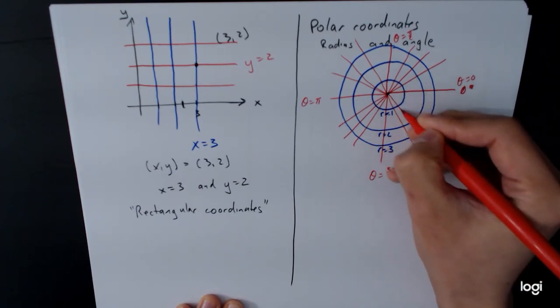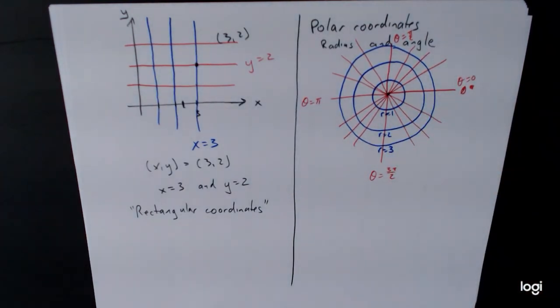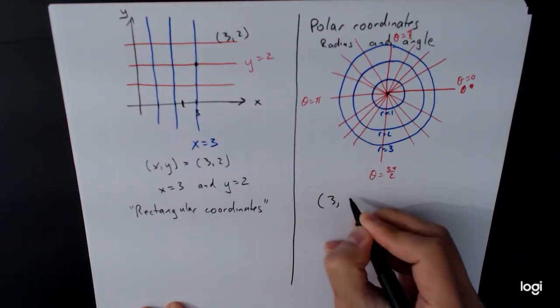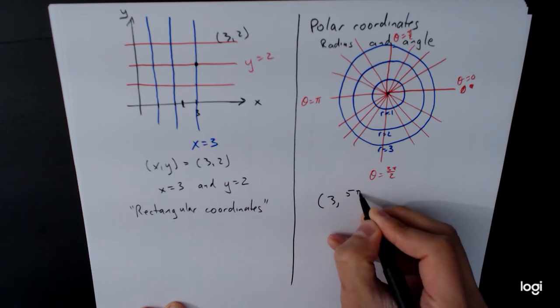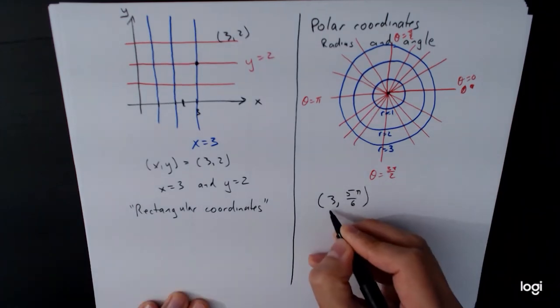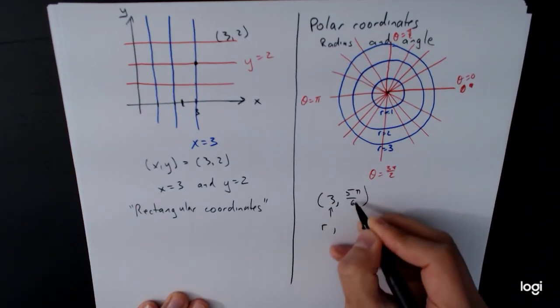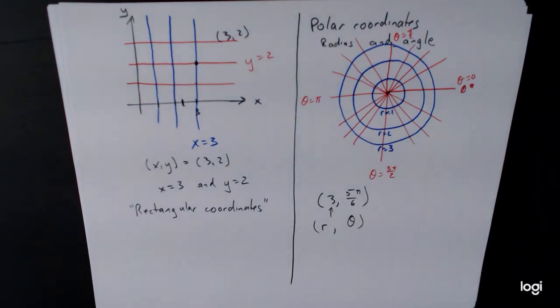And we can start to fill out more of this grid. And so for example, if we wanted to find a point, say the point (3, 5π/6). This part right here, that is your radius. And right here is your angle. So we want to be on the intersection of the circle of radius 3.